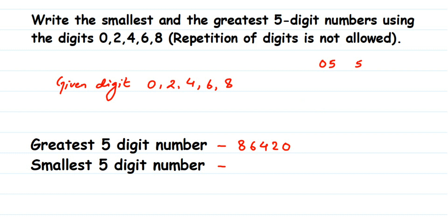What you should do is write the second smallest number first instead of the smallest. The second smallest here is 2, so write 2 first, then write the smallest number 0, and then continue as normal — next is 4, then 6, then 8 — giving 20468. You just interchange the places of zero and the second smallest digit, so zero comes in the second place.